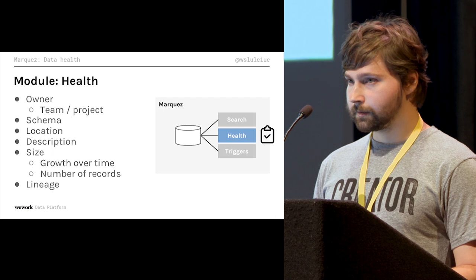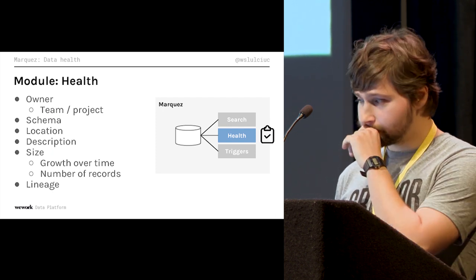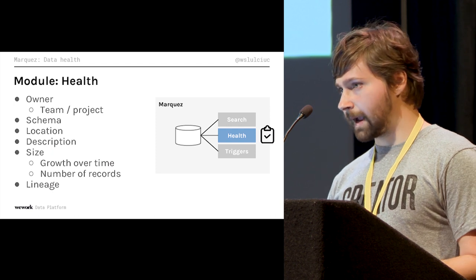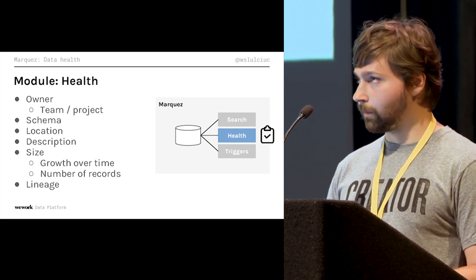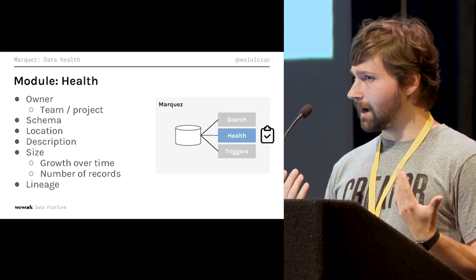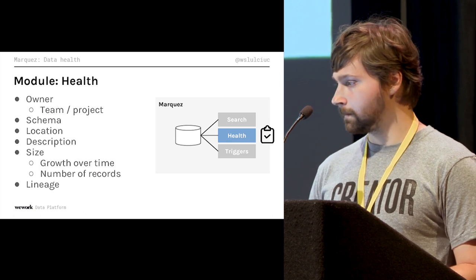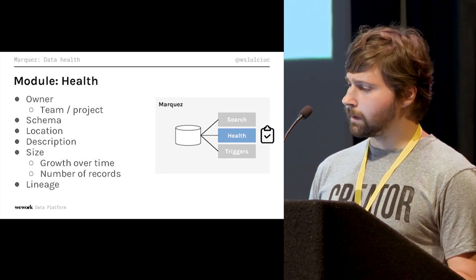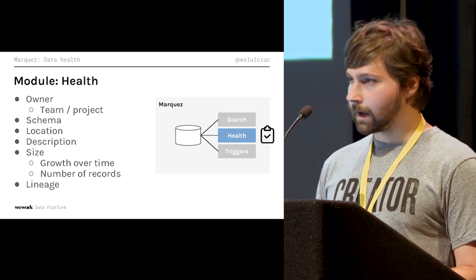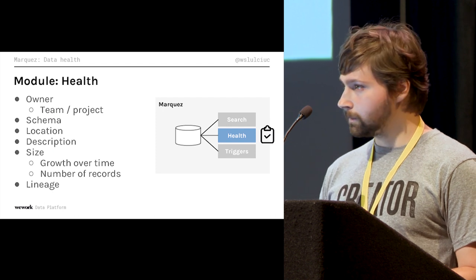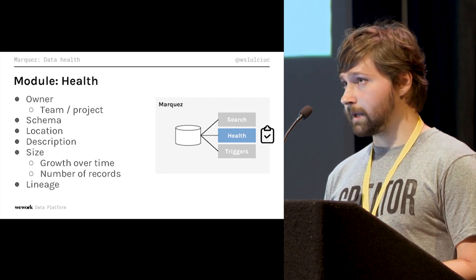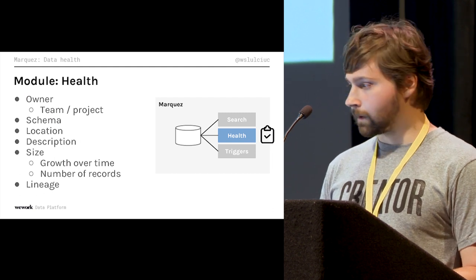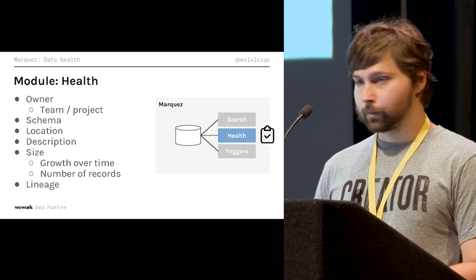The health module is about knowing: are the values present in that dataset correct and accurate? Are there gaps in the data? Does it have a schema — so that if I'm reading a dataset, I know the field types and descriptions. I also want to know where it's located. Looking at size over time is important: if you start seeing drops, there could be an upstream issue with the job producing that dataset. You want to see growth over time, and the number of records is also useful to know.